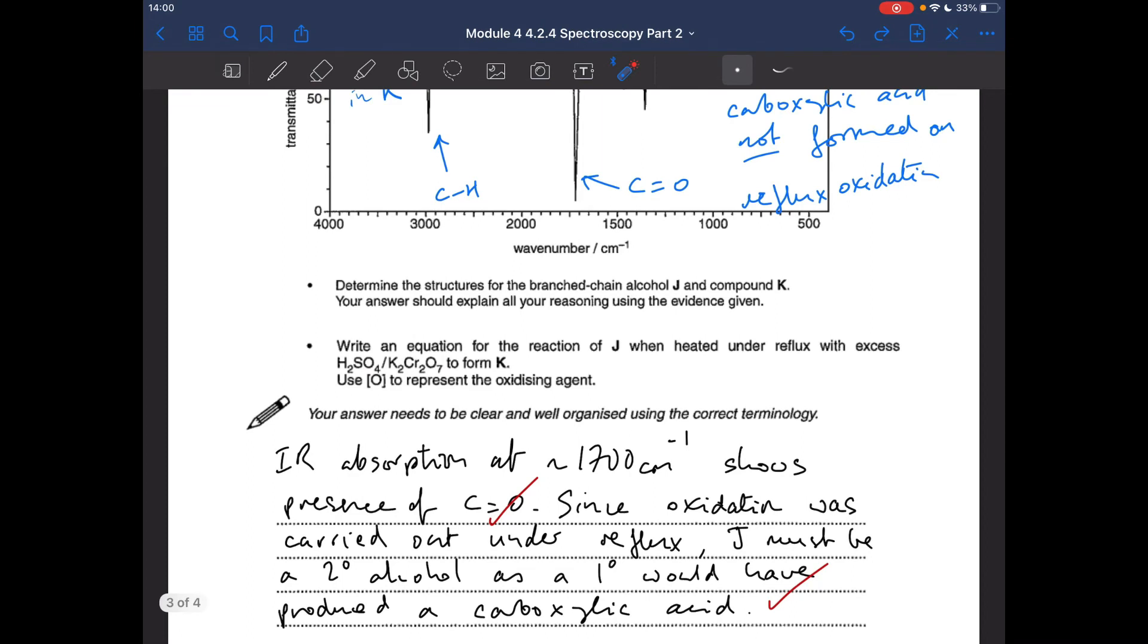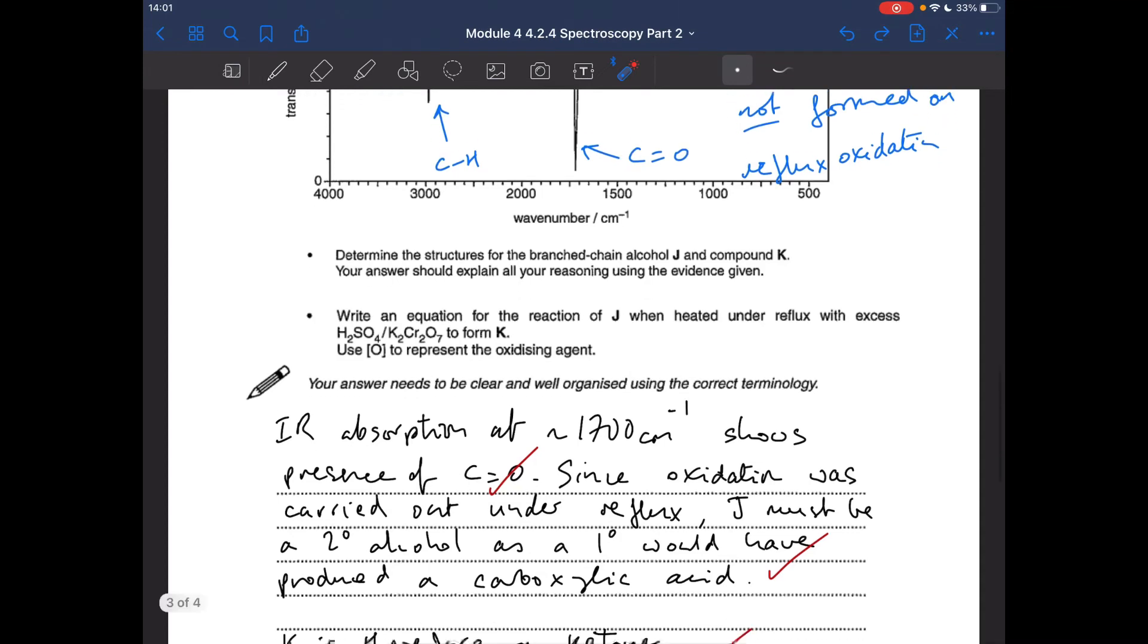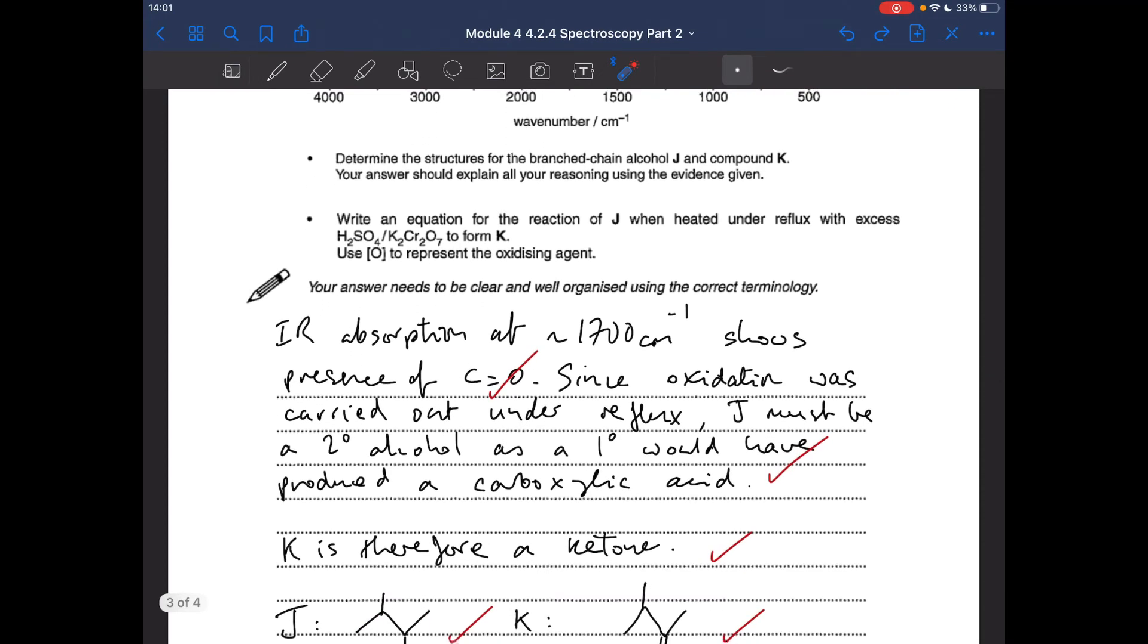So similarly before, IR spectrum shows that around about 1700, say cm⁻¹, we've got the presence of a C=O. Since oxidation was carried out under reflux, J must therefore be a secondary alcohol because a primary would have produced a carboxylic acid. So same sort of statement as the previous question. K is therefore a ketone.